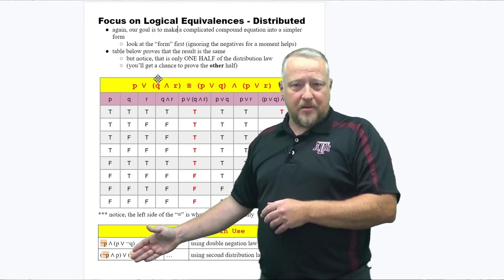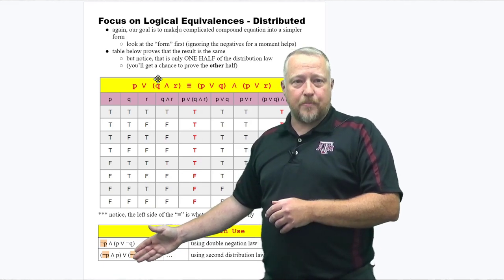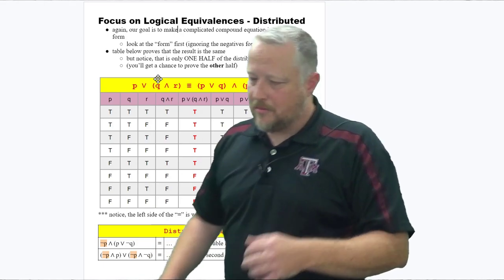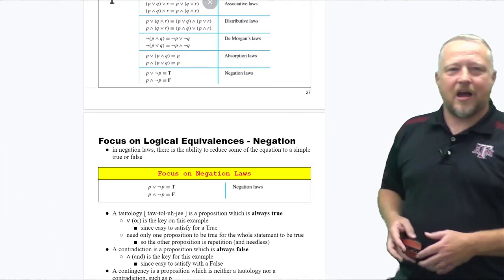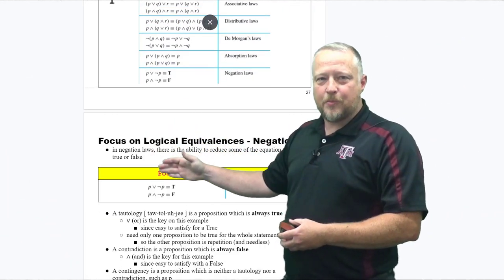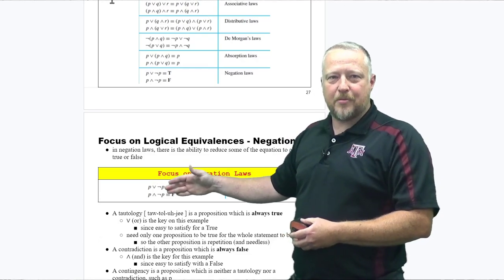If you scroll back up in the notes, if we have a not p and another p, that ends up being what? Let's go back up to the notes real quick, and you can see that we just did that one. There's our not p, and there's our p and not p equals false.